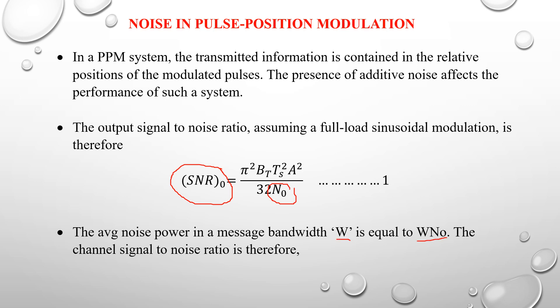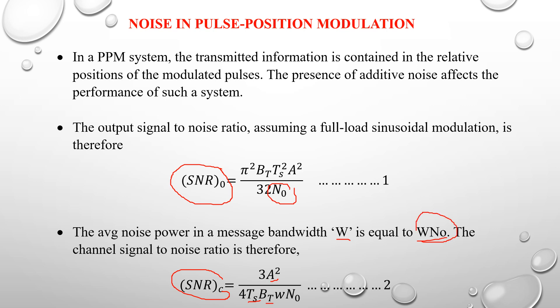The average noise power in the message bandwidth W is equal to W · N₀. The SNR channel is: SNR_channel = (3A²) / (4T_s · B_T · W · N₀), where A is the signal amplitude, T_s is the sampling time, B_T is the transmission bandwidth, W is the message bandwidth, and N₀ is the noise spectral density. The figure of merit is defined as SNR_output divided by SNR_channel.